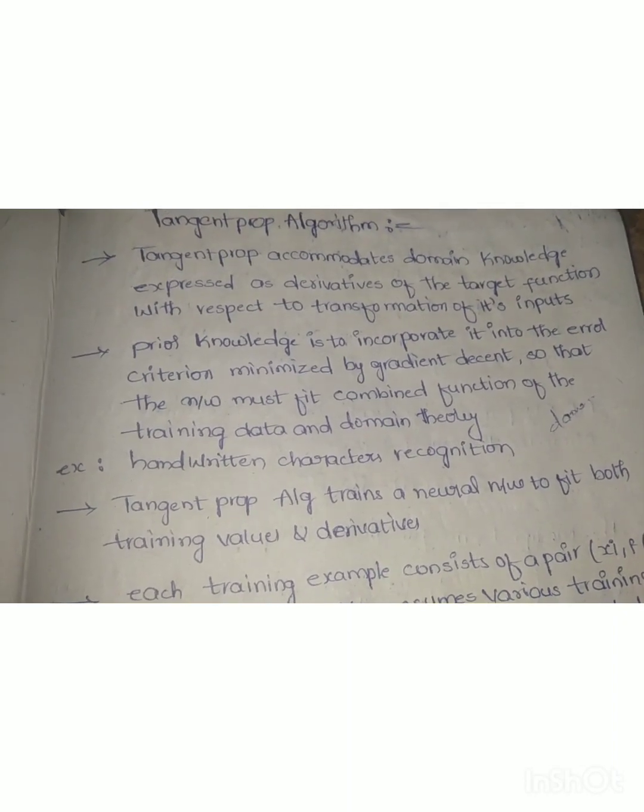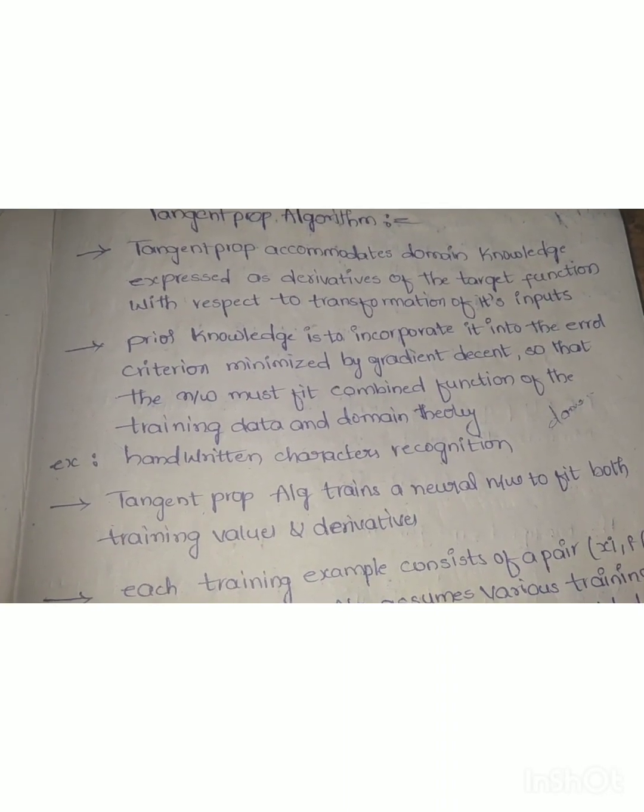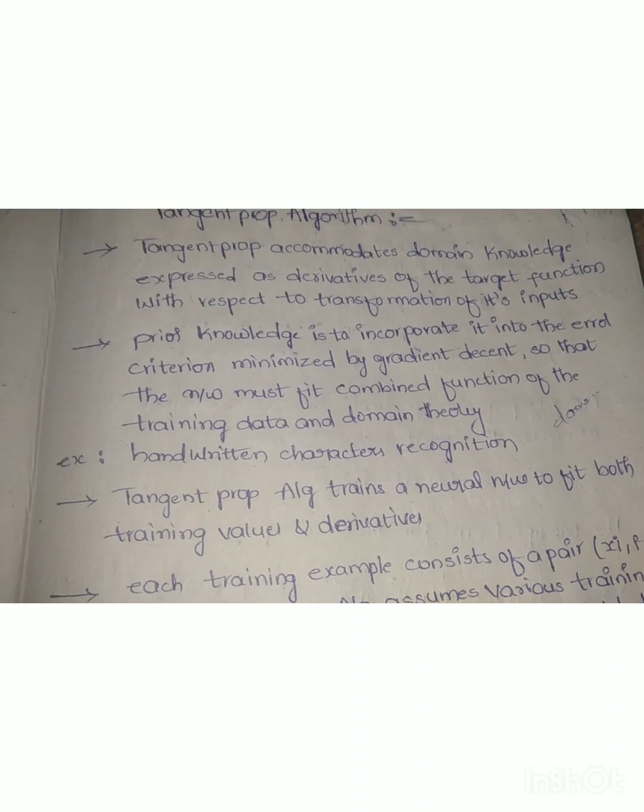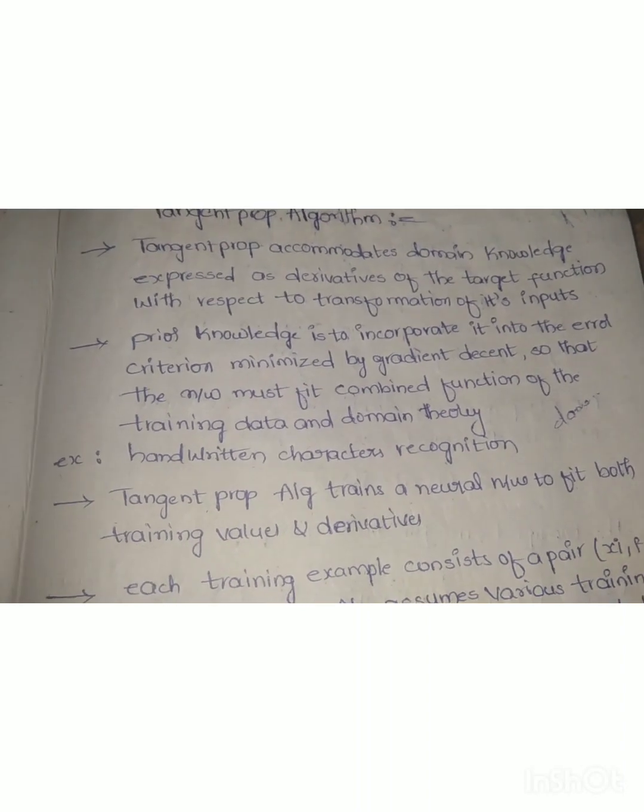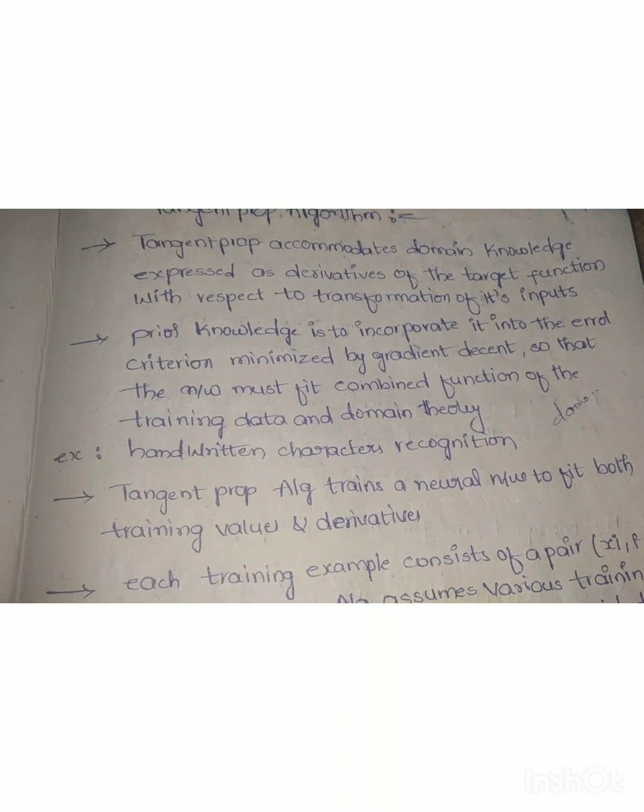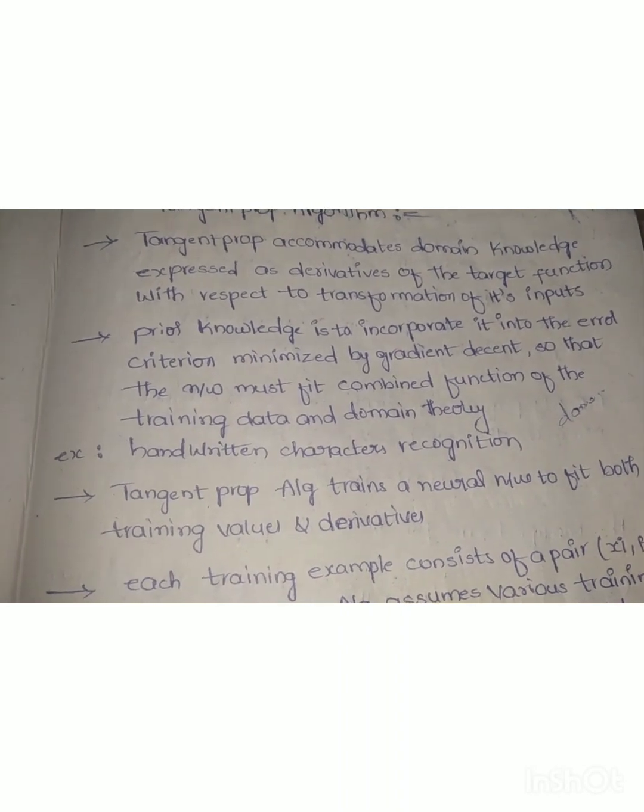In the tangent prop algorithm, prior knowledge is incorporated into the error criterion minimized by gradient descent so that the network must fit a combined function of the training data and the domain theory.